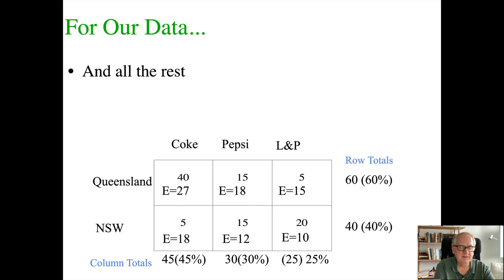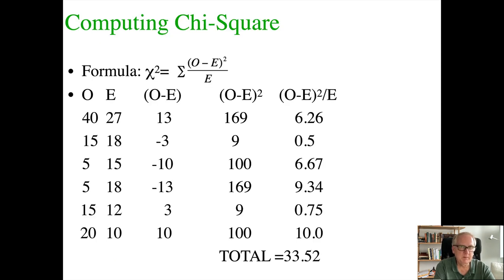Using the same chi-square formula across all six cells: observed values are 40, 15, 5, 5, 15, and 20; expected are 27, 18, 15, 18, 12, and 10. The O minus E values are: 13, −3, −10, −13, 3, and 10. Squaring those: 169, 9, 100, 169, 9, and 100. Dividing each by its expected value gives: 6.26, 0.5, 6.67, 9.34, 0.75, and 10. Summing all of those gives a chi-square statistic of 33.52.